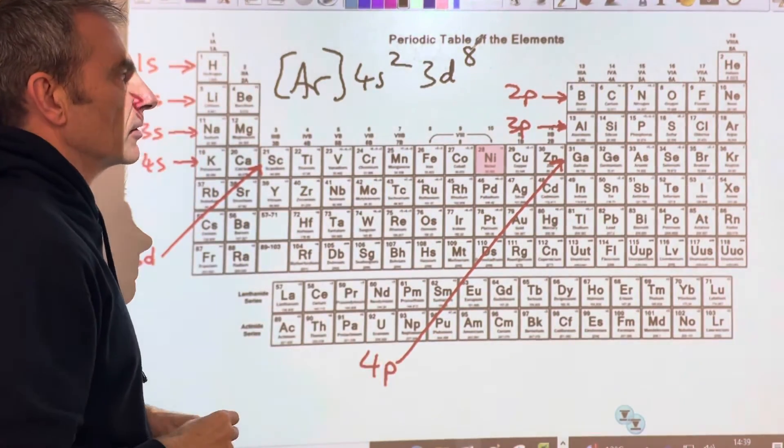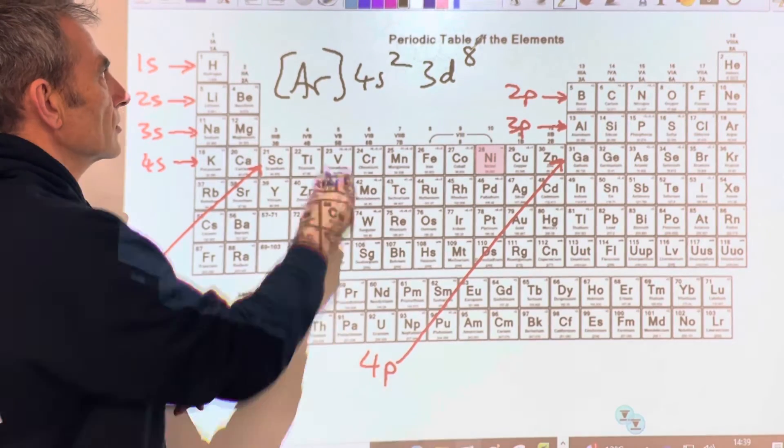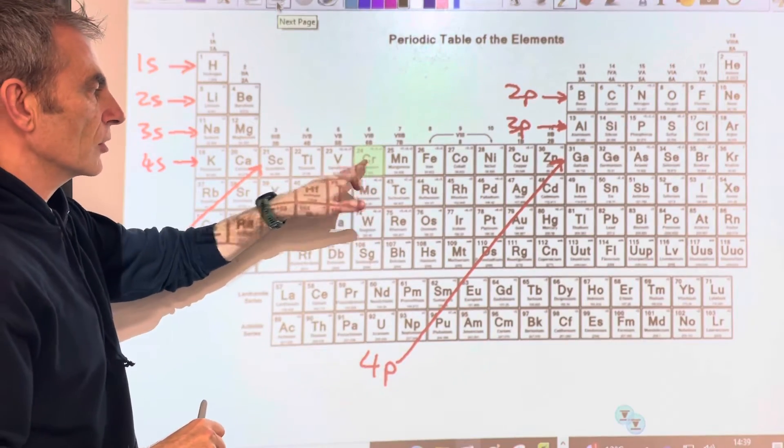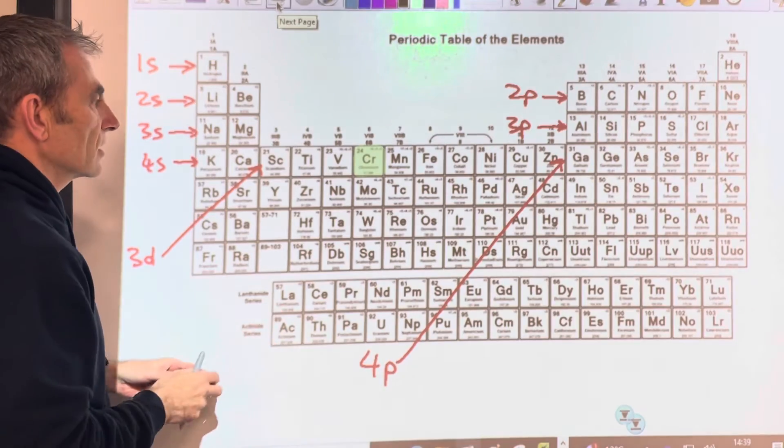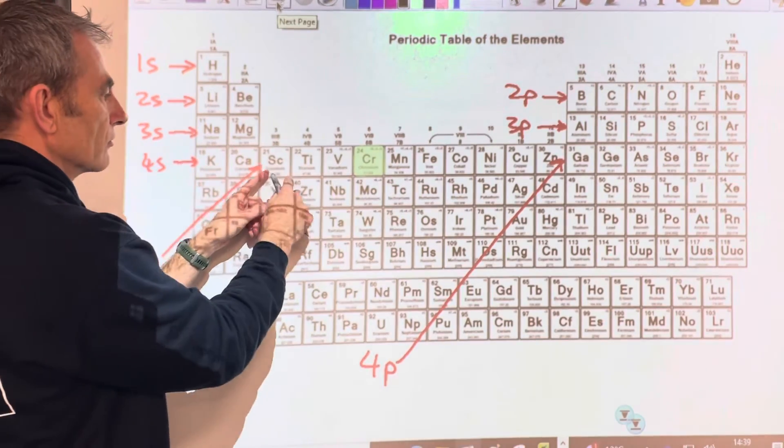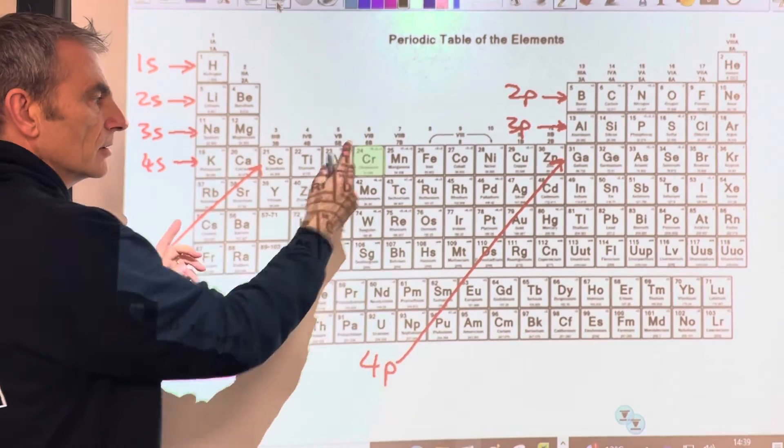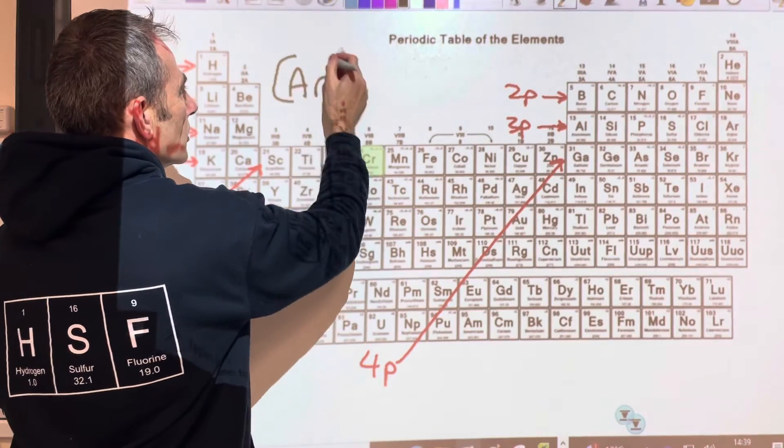Okay, so the two rogue ones now. So remember, chromium is a rogue electron configuration because it's not what you'd expect. It's not 4s² 3d one, two, three, four. It's 4s¹ 3d⁵. So I've just done the structure really, so I've gone in square brackets because that's the noble gas before - 4s¹ 3d⁵.